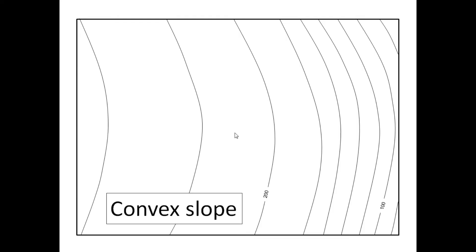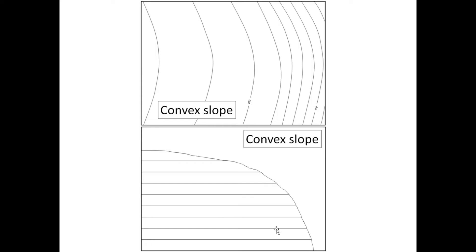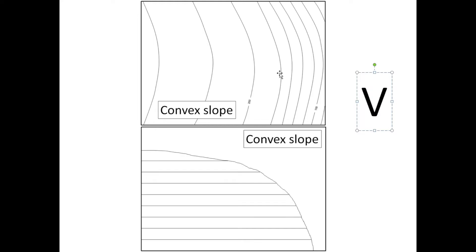A convex slope has contour lines closely packed at the bottom or foot of the hill or mountain, and as we go to the top they are spread further apart. For the memory trick, we use a 'V' for convex — the two lines of the V are close together at the bottom, just like the contour lines at the foot of the hill, and spread out as we go up. That's how you remember the difference between convex and concave.